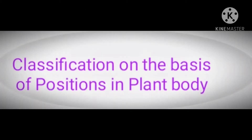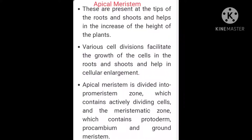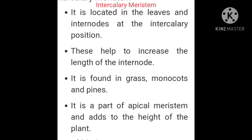Next hai classification based on the position in the plant body. Pahla hai Apical Meristem — these are present at the tips of the root and shoot and help in the increase of the height of the plant. Various cell divisions facilitate growth in the root and shoot and help in cellular enlargement. Apical meristem is divided into the pro-meristematic zone, which contains actively dividing cells, and the meristem zone, which contains protoderm, pro-cambium and ground tissue. Second hai Intercalary Meristem — it is located in the leaves and internodes at the intercalary position, helps to increase the length of the internode, and is found in grass, monocots and pines. It is a part of apical meristem and adds to the height of the plant.